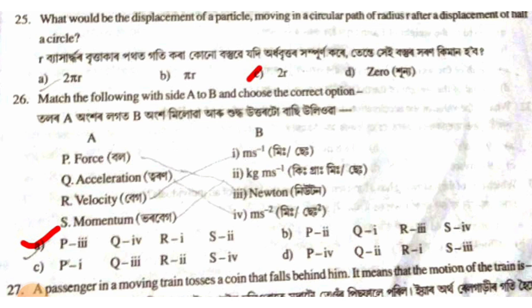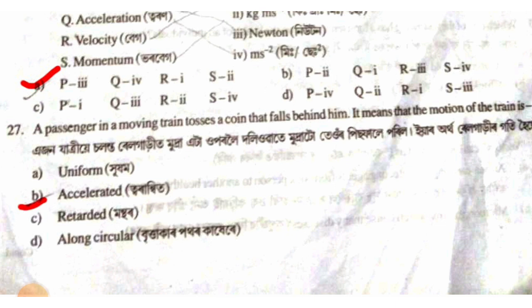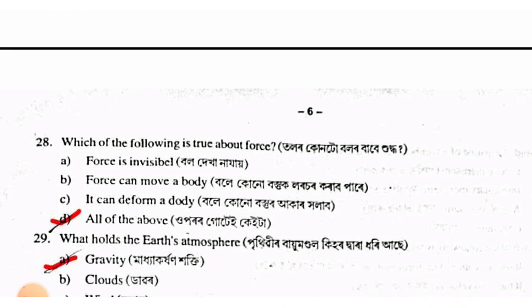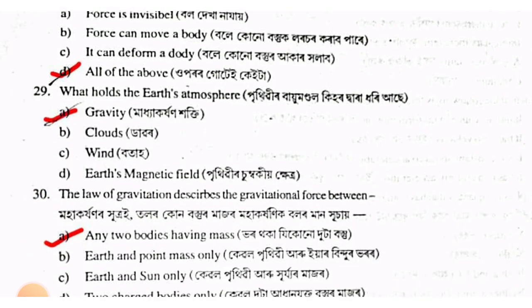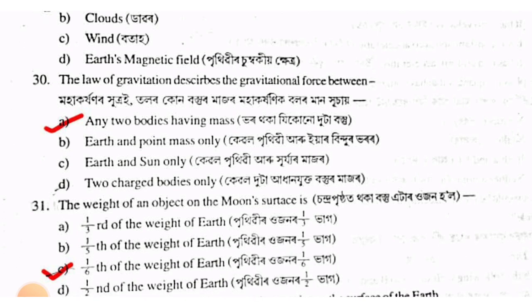Units: acceleration is meter per second square, velocity is meter per second, momentum is kg meter per second. Any two bodies having mass attract each other — option D.